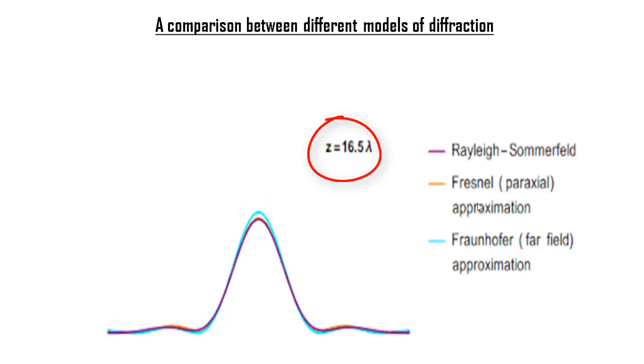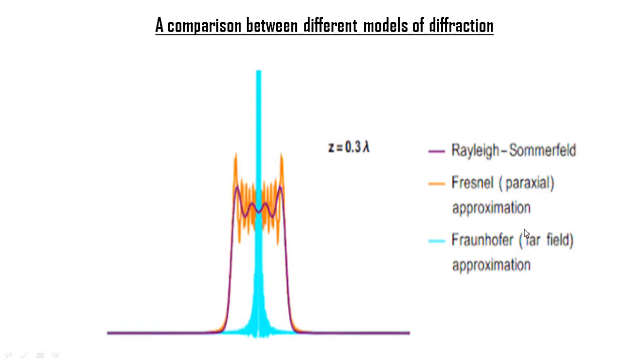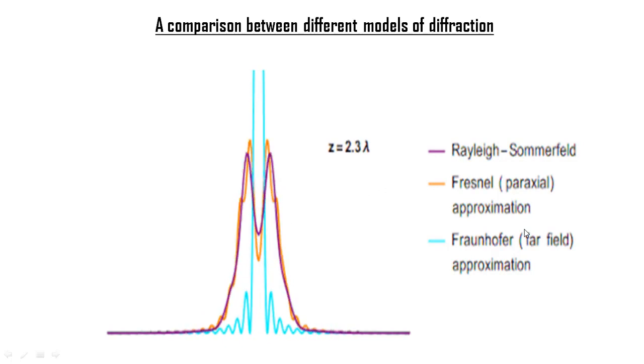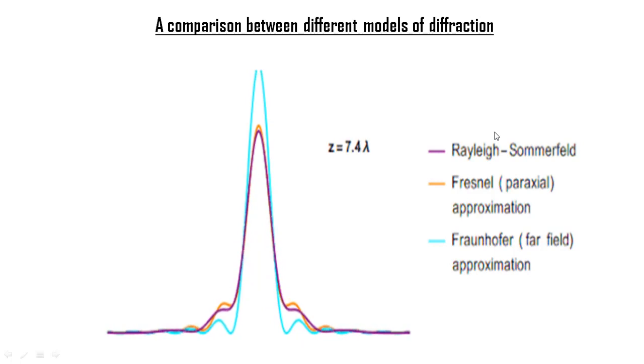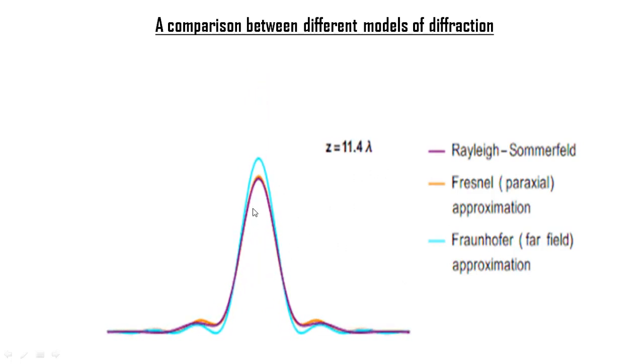As already mentioned, the Fraunhofer's model is a far-field approach, and we can verify it here. At about z equal 9 times lambda, we're entering the regime called the far-field and all the three models begin to overlap. We can see right about now.